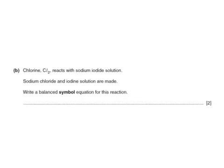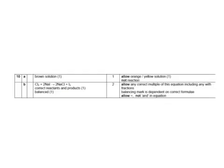Chlorine reacts with sodium iodide to make sodium chloride and iodine. Write a balanced symbol equation. Sodium iodide is NaI. Sodium chloride is NaCl and iodine is I₂. We've got two iodines on the right-hand side, so we need two on the left, giving 2NaI. Now we've got two sodiums, so we need two sodiums and two chlorines: Cl₂ + 2NaI → 2NaCl + I₂. The brown solution of iodine is noted, and the correct balanced equation gets two marks.